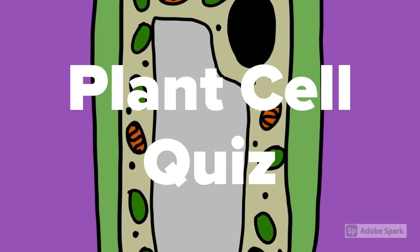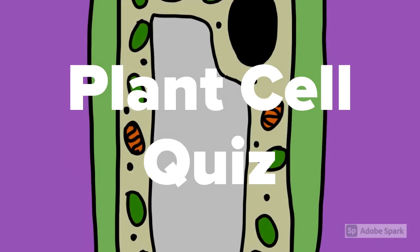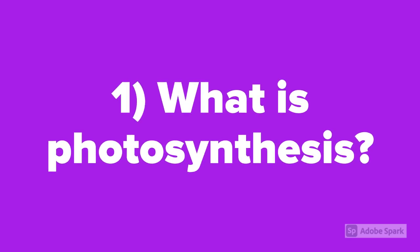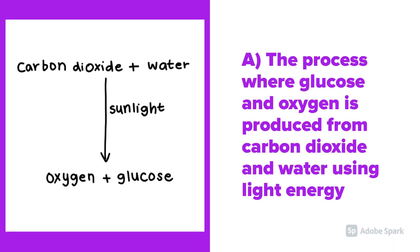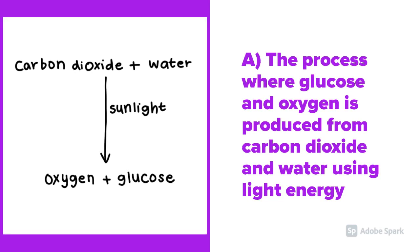Plant Cell Quiz. Question number 1: What is photosynthesis? Photosynthesis is a process where glucose and oxygen is produced from carbon dioxide and water using light energy.